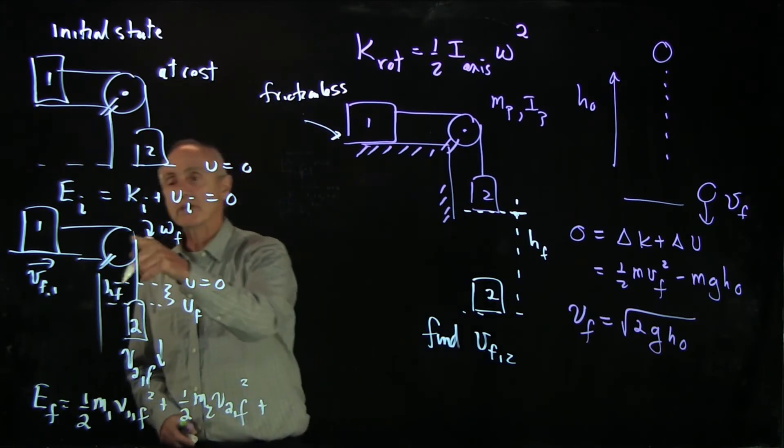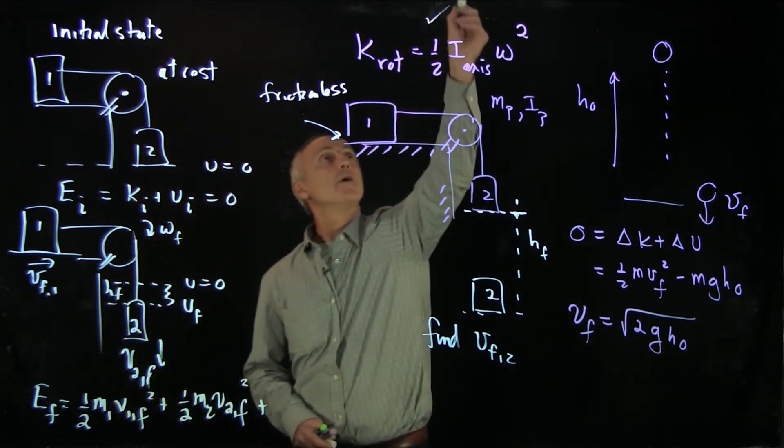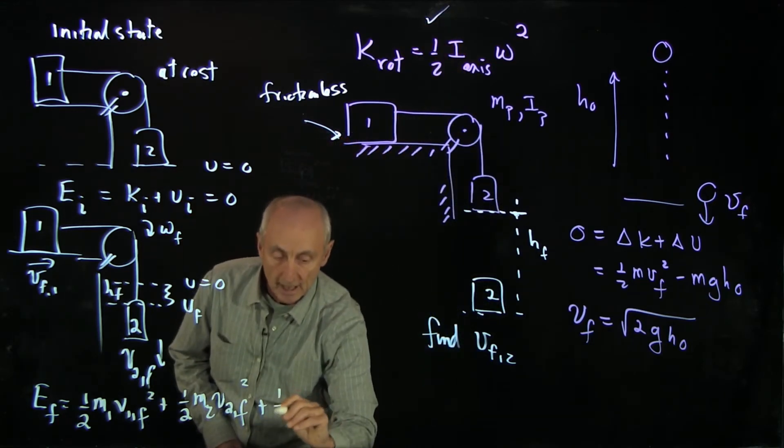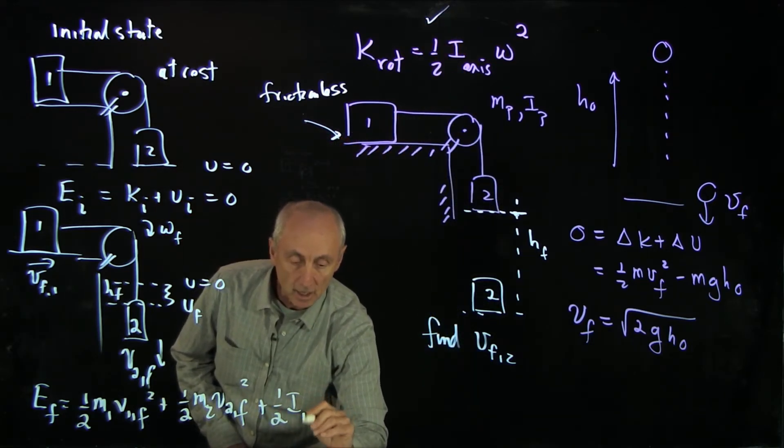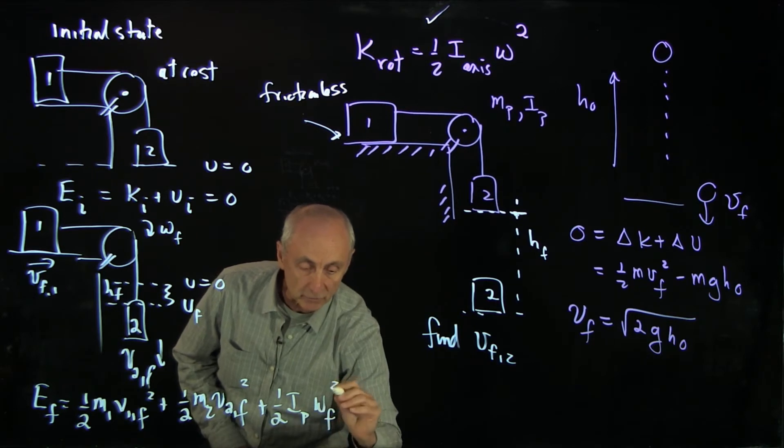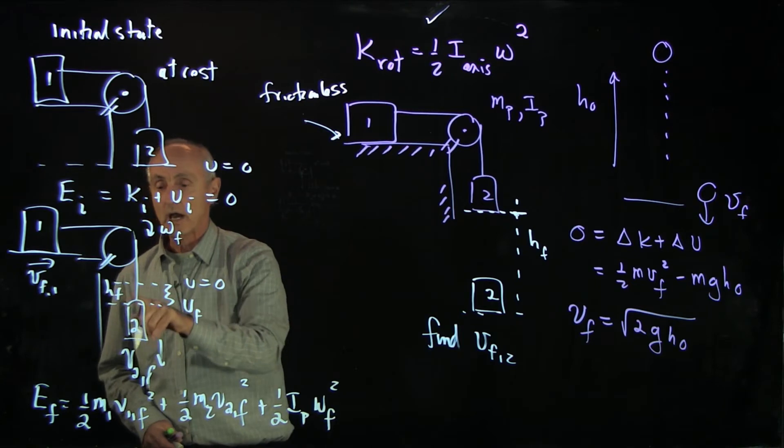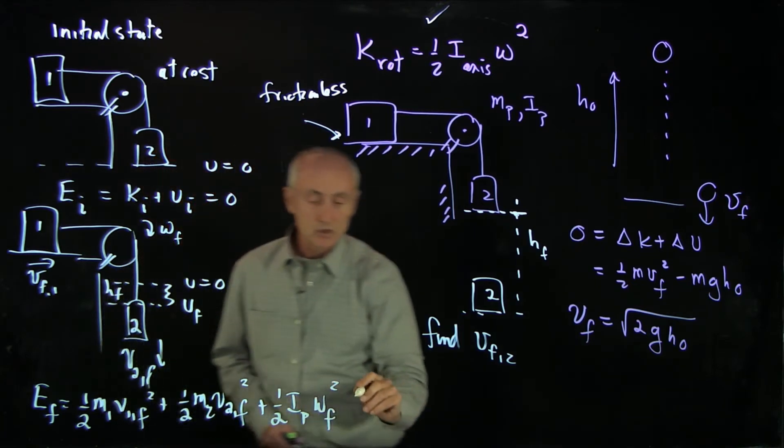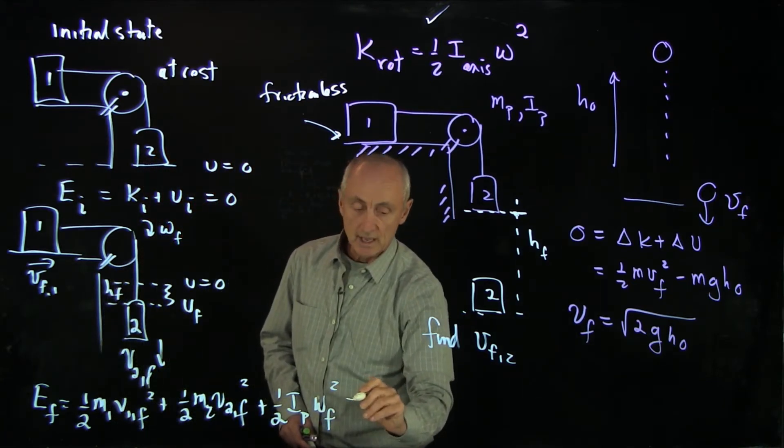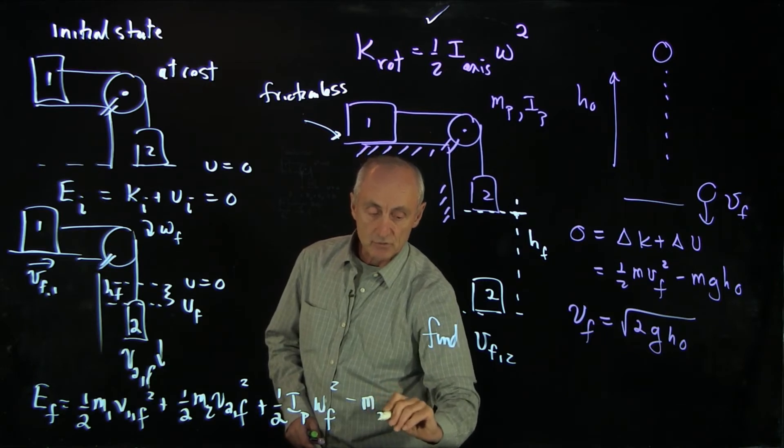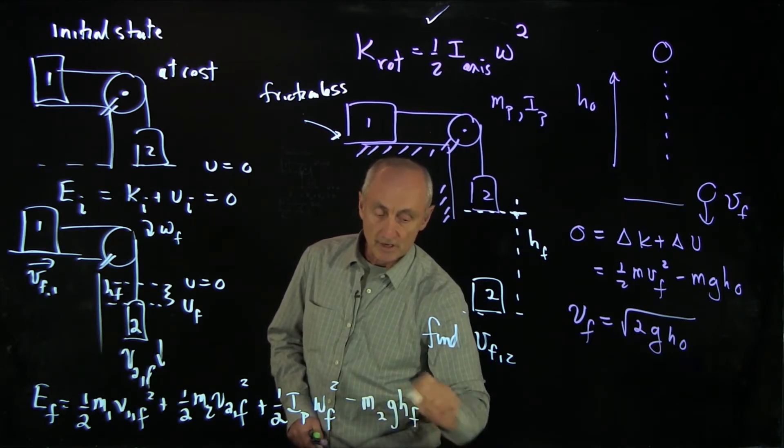We also have the kinetic energy of the pulley, which is given by 1 half i about the pulley omega final squared. And what about our final potential energy? Well, we dropped the height h final, so we have block 2 has moved minus m2 gh final.